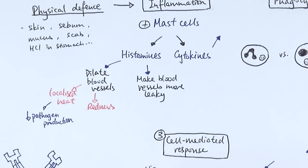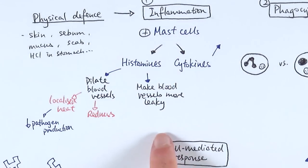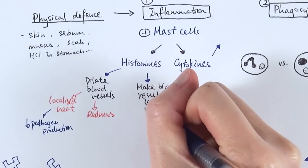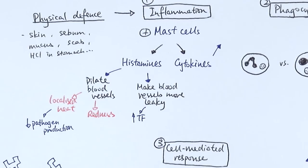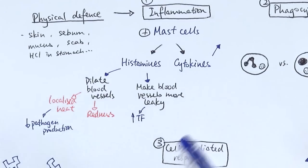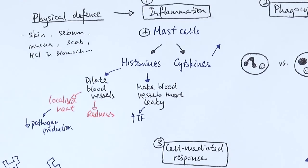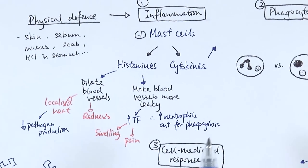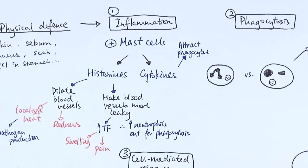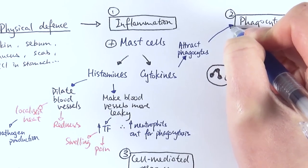The point of bringing more blood to the inflamed area, combined with making blood vessels more leaky, is to make more tissue fluid. Because the vessels are more leaky, other molecules that normally stay in the bloodstream can come out — the main one being white blood cells. This increases tissue fluid, bringing more chemicals to the inflamed area to tackle the infection. The two symptoms here are swelling and pain — the extra tissue fluid squashes pain receptors, causing pain, and causes swelling. The cytokines attract phagocytes, leading to the second stage: phagocytosis.